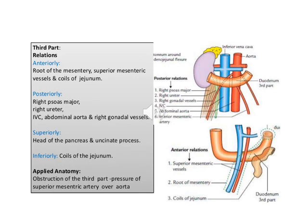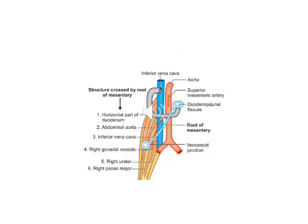Superiorly the third part of the duodenum is related to the pancreas, and inferiorly to the coils of the jejunum. The posterior relations of the third part of the duodenum include the right psoas muscle, inferior vena cava, aorta, and right gonadal vessels.